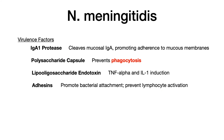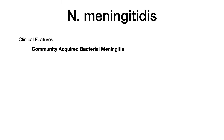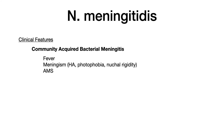Now let's get into the clinical features. As the name implies, meningitis is essentially in the name, so this is a major cause of community-acquired bacterial meningitis. The symptoms to look out for are fever, headache, photophobia, nuchal rigidity, and altered mental status.